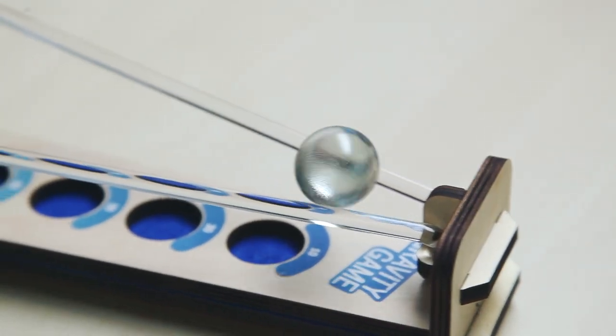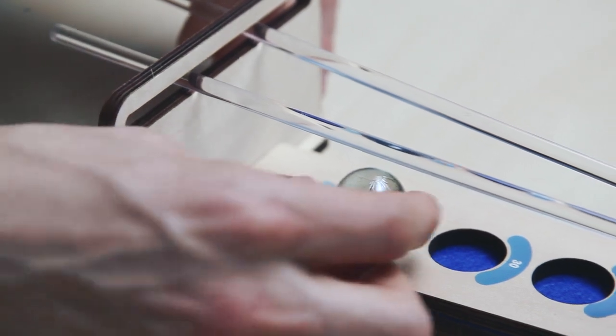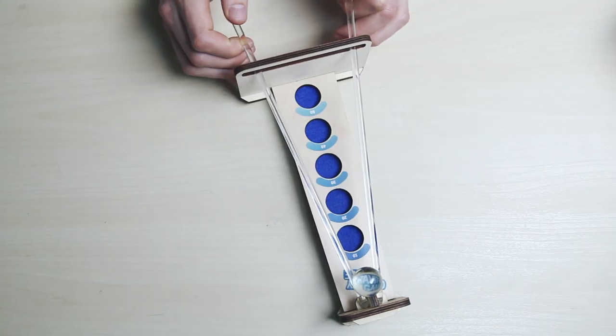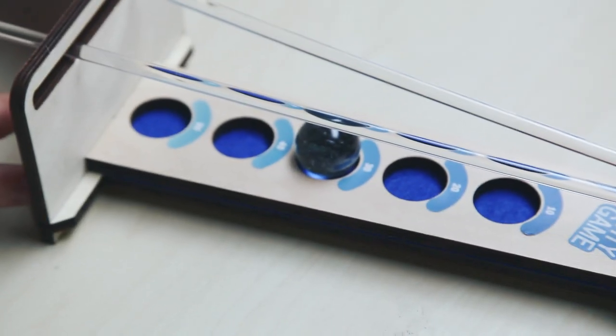The object of your gravity game is simple. Try to get the ball up the acrylic rods as far as you can. If you get it in the first well, it's 10 points, second, 20, third, 30, all the way up to 50 points.